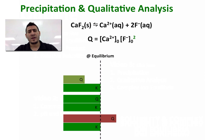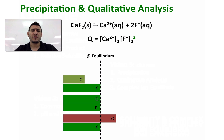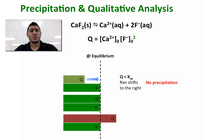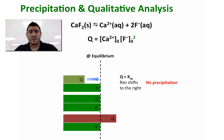The only difference between Q and Ksp is that for the reaction quotient Q we use the initial concentrations. To calculate Q I will be using the initial concentrations of Ca²⁺ and F⁻. Once I calculate Q I compare it to Ksp. When Q is less than Ksp, the reaction will shift to the right and therefore no precipitation will form — the solid will dissolve.